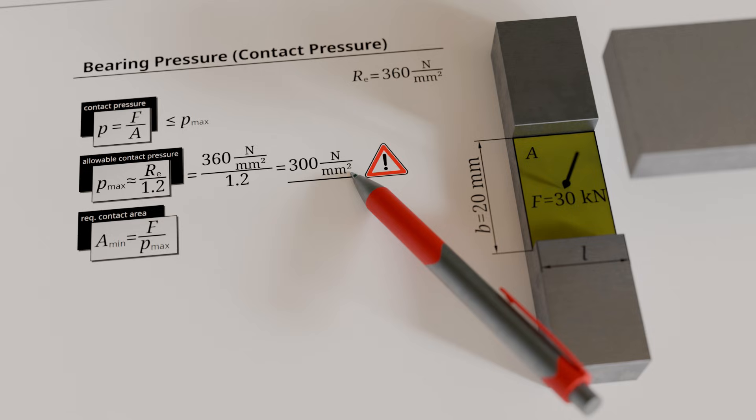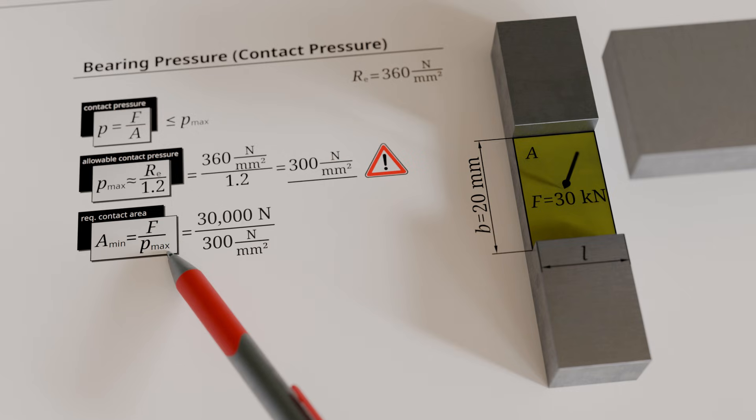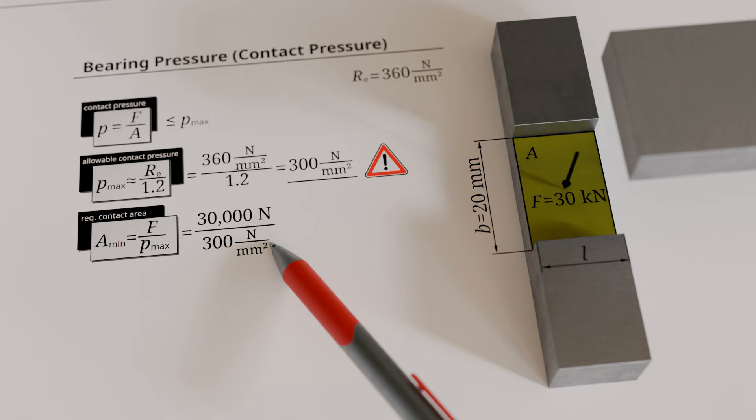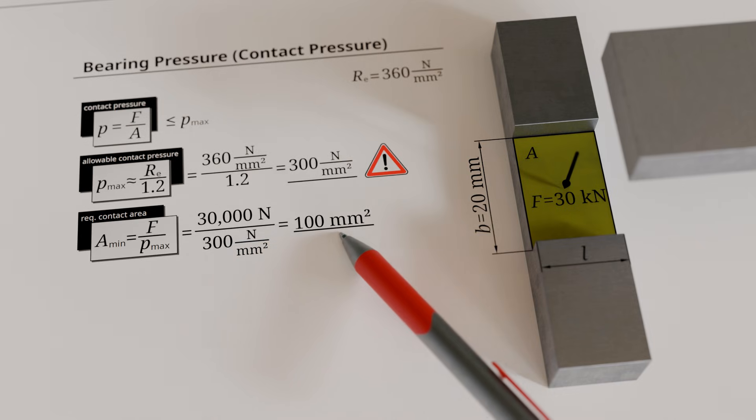With this allowable bearing pressure and the acting force of 30,000 newtons, we can now determine the minimum required contact area. In this case, it amounts to 100 square millimeters.